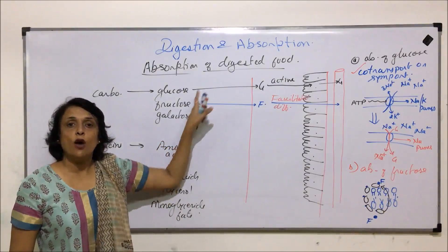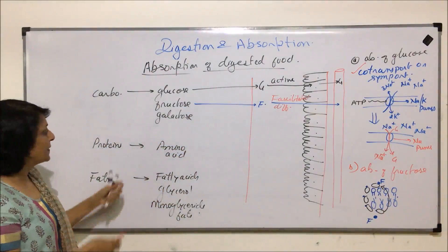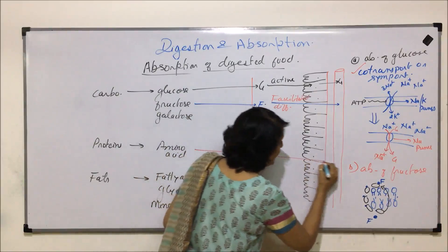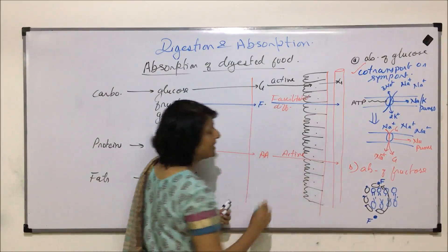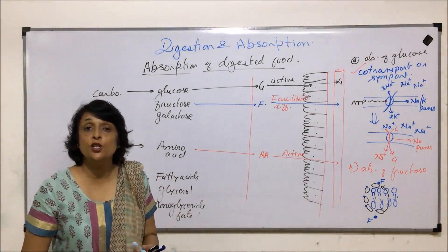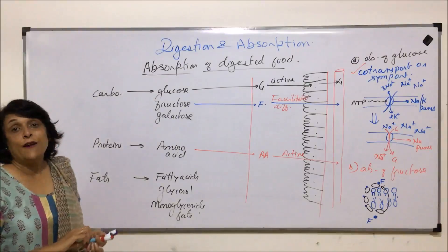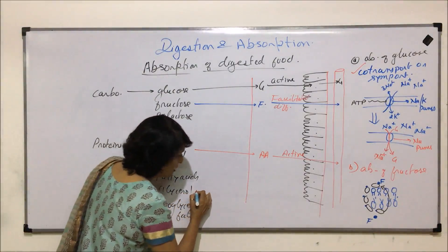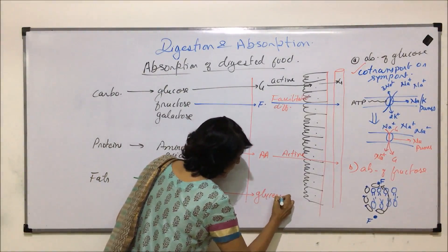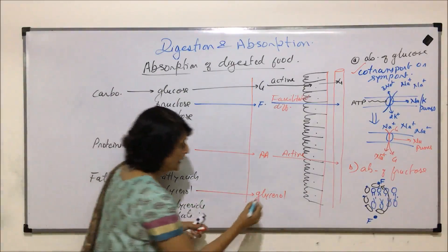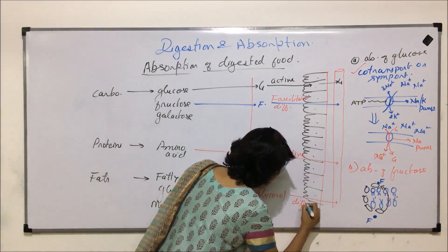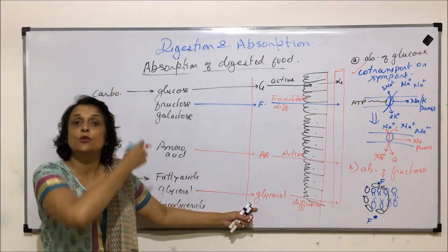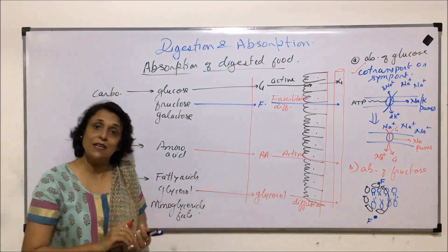It is carrier-mediated but there is no involvement of energy, and that is why we call it facilitated diffusion — that is for fructose, mannose, and all. Galactose also gets absorbed in the same way, that is by active absorption. Amino acids are absorbed by an active process, that is with expenditure of energy. Glycerol absorption is simple diffusion — it is fat soluble and that is why it can come through the plasma membrane in the easiest possible manner.